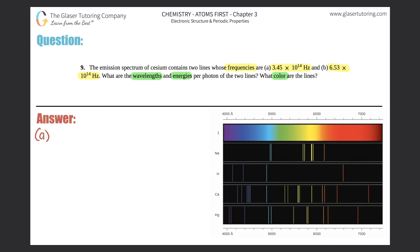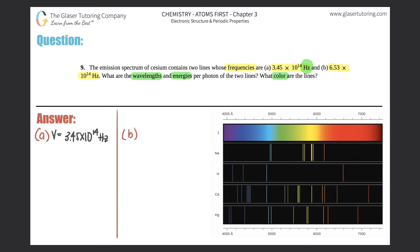So we have A and B — let me write this over here and put a line between them to have room. We did a very similar question before, so this one will be at a quicker pace. They give you the frequency, so that's ν. Frequency for A is 3.45 times 10 to the 14th hertz. Just know that hertz is the same thing as seconds to the negative one — it's still the standard unit for frequency. For B, the frequency is 6.53 times 10 to the 14th hertz.